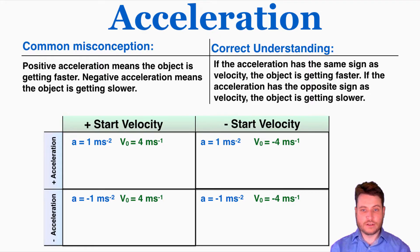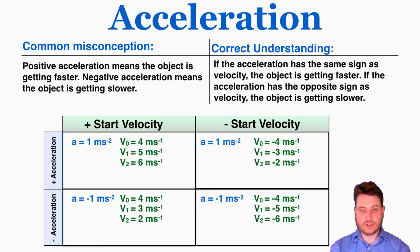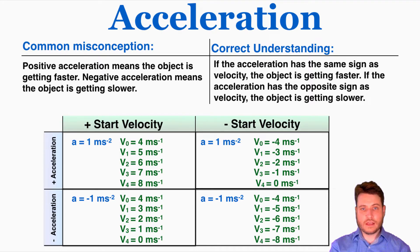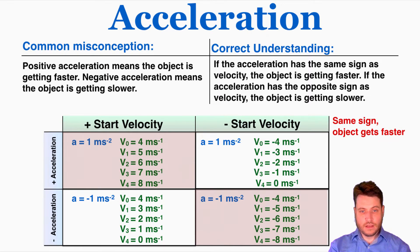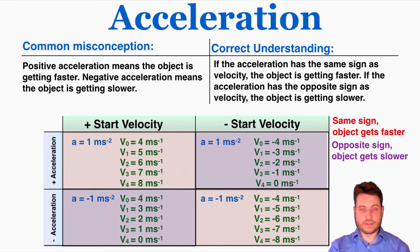Observing how the velocities change over time in the table, you can see that the velocities getting a bigger magnitude are the ones that have the same sign as acceleration. If velocity and acceleration have the same sign, the object is getting faster — this holds true for negative velocities too. In the bottom right, there's a negative acceleration, but the object is getting faster and faster in the negative direction. So the sign of acceleration alone tells you nothing about whether the object is speeding up or slowing down. When acceleration and velocity have opposite signs, that's when the object is slowing down.